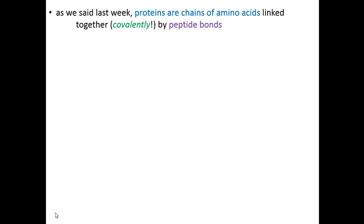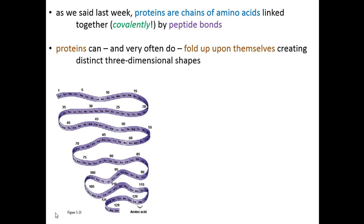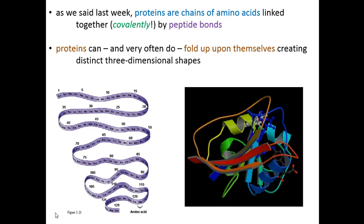Proteins are chains of amino acids. We talked about the formation of peptide bonds — that dehydration reaction — and it's peptide bonds, those covalent bonds, that hold amino acids together to form proteins. If you look closely, you'll see that first amino acid there is a lysine, followed by a valine, a phenylalanine, a glycine — a chain or ribbon of individual amino acids held together by covalent peptide bonds. Proteins can, and the vast majority do, fold up into three-dimensional structures, folding this ribbon into itself, creating a three-dimensional structure.